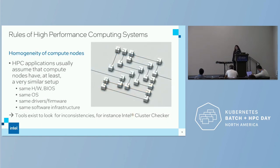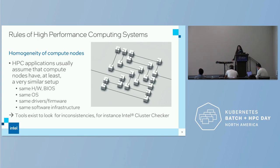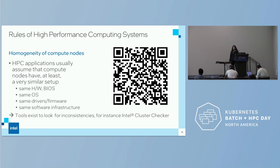Most of these systems are homogeneous, at least from the old world. HPC applications usually assume that nodes have, at the very least, a very similar setup: same hardware, same BIOS, same OS, same drivers, same firmware, and same software infrastructure. There are tools that look for inconsistencies — for instance, Intel Cluster Checker. I used to work on that project. Sometimes we'd get reports with very long logs, and the only thing wrong with the cluster was different Ethernet drivers. That alone was killing their performance.